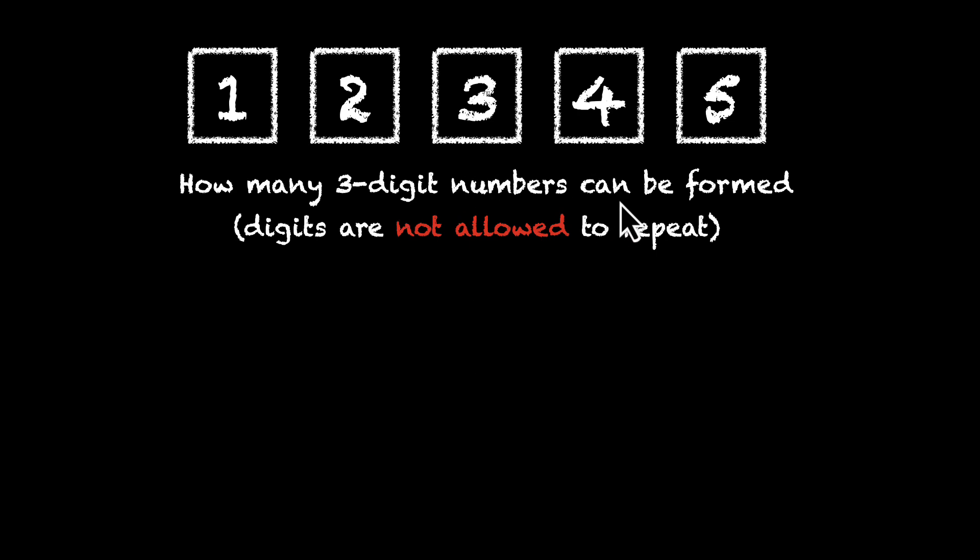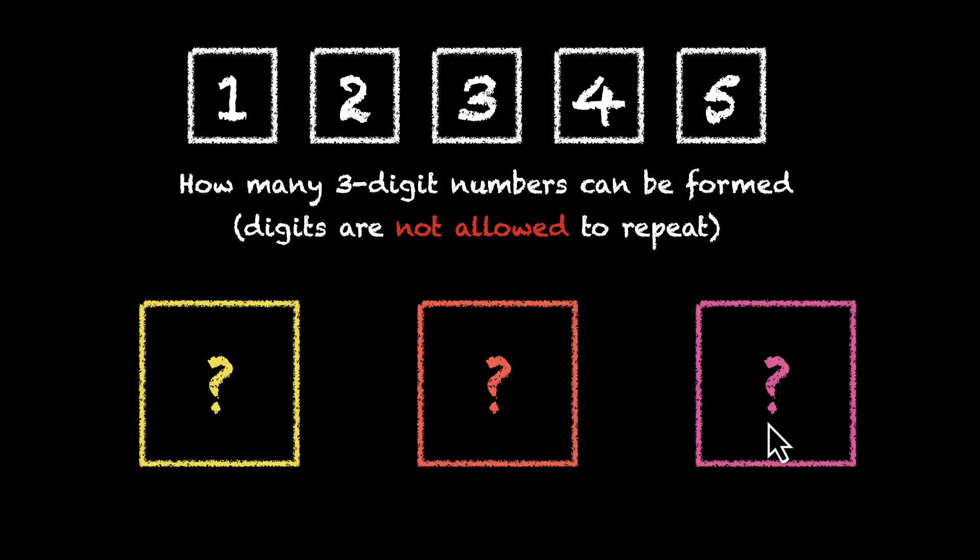So if you break our job down into its smaller parts, this is what we have. We have to fill a digit, and another digit, and another digit. Let me be careful about it. We're filling this digit, AND we're filling this digit, AND we're filling this digit. So we have these 3 things that we're doing, and we have to do all 3 of them to finish our job.